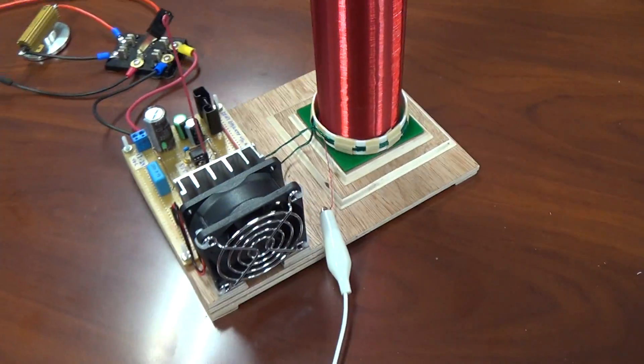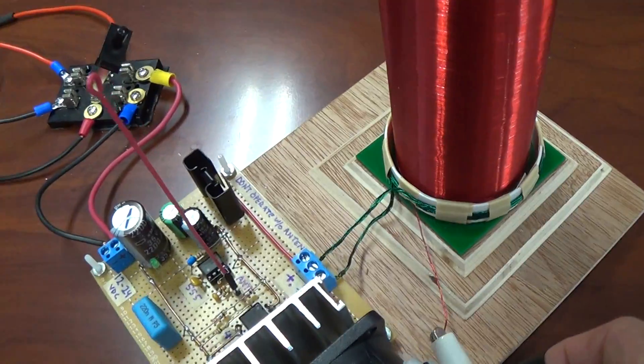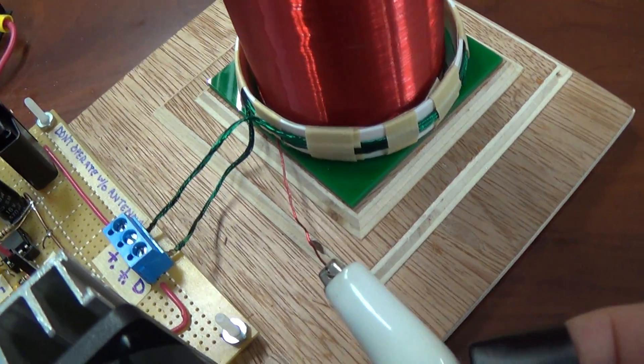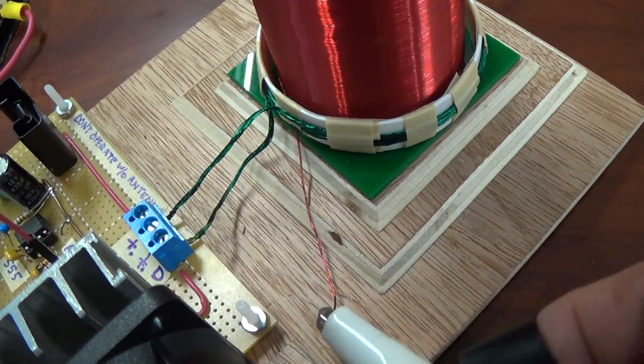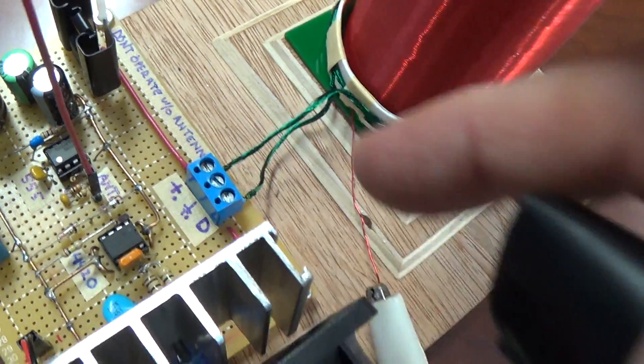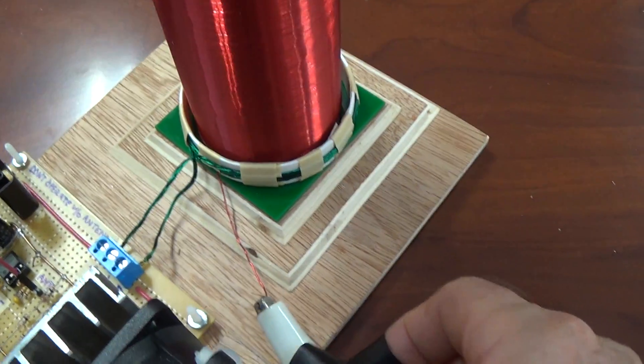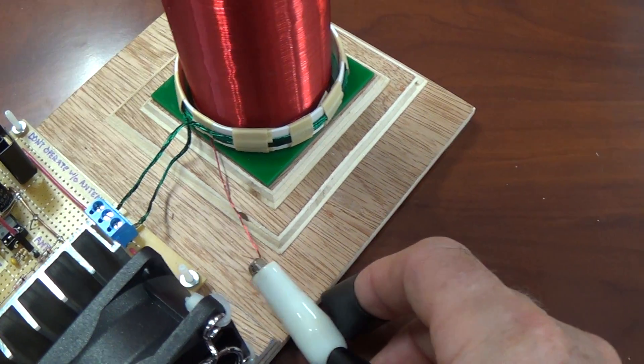Hi everyone, a quick update on the Tesla coil. What I've done is the bottom of the secondary connection here would connect to this center terminal, which is basically the ground to this circuit. I just decided, what if I just sent that to ground, earth ground?